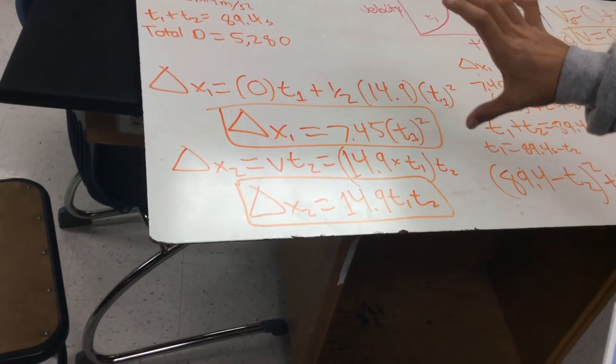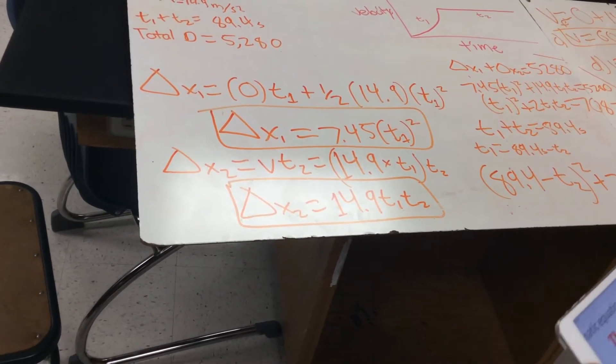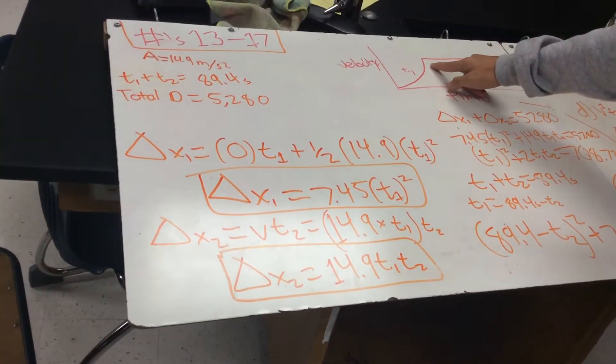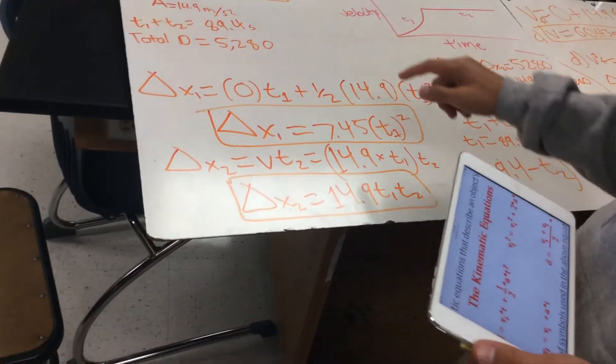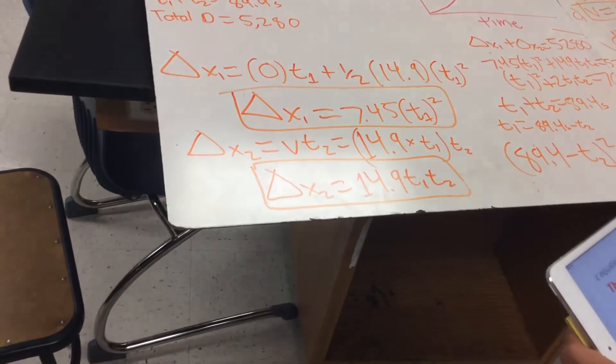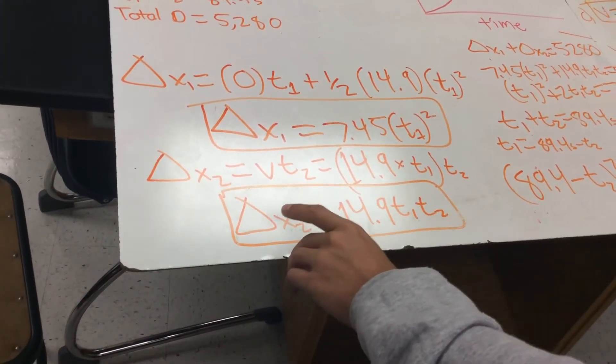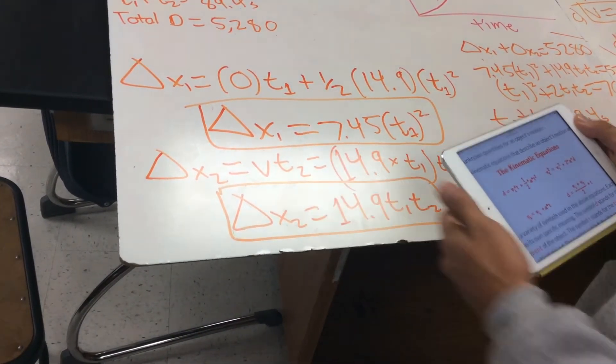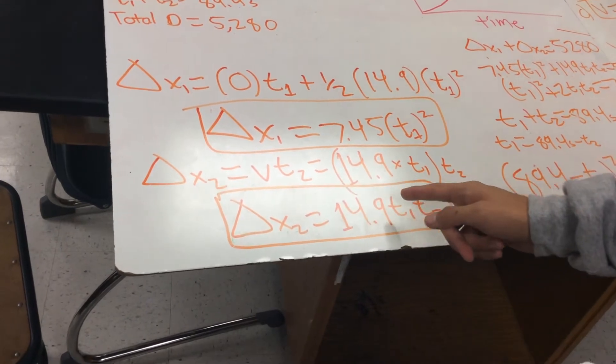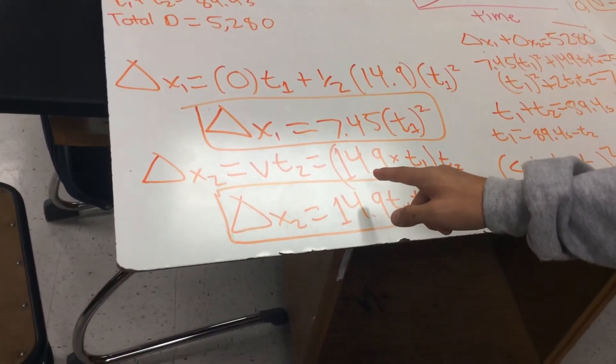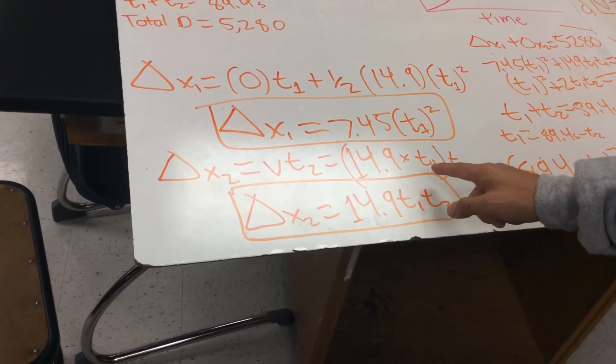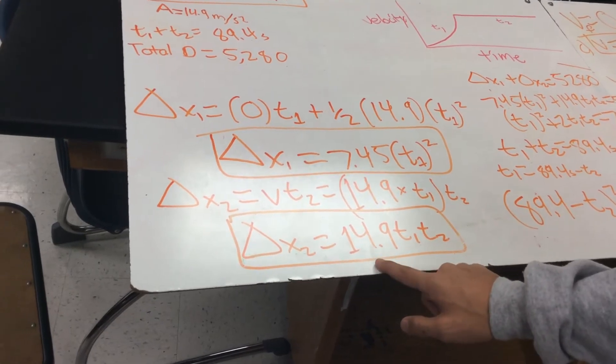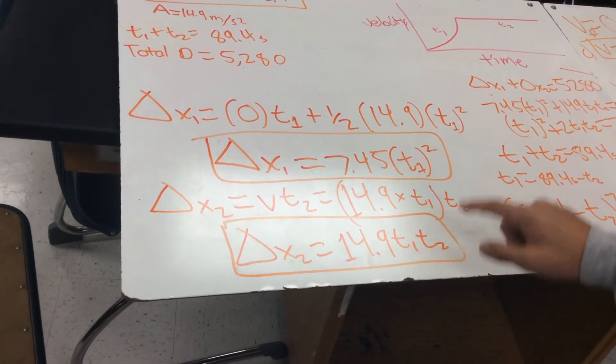And then that's as far as you can go. And then for the second part over here, when the engine shuts off and it goes at a constant velocity, you will use, you'll know that the change in displacement is velocity times time. And the velocity is basically the velocity that we got to this point. So it's the acceleration times time 1. So that substitutes for v, the velocity, times time 2. So basically you get acceleration, 14.9 times t1 times t2, and that's as far as you can go.